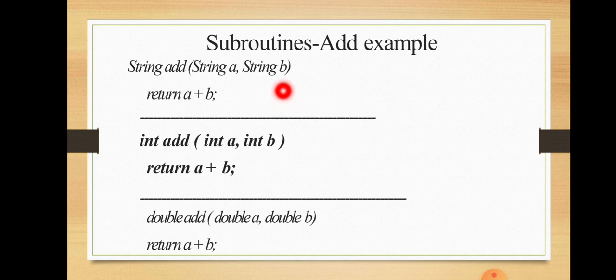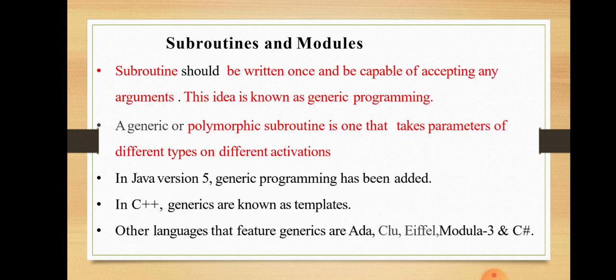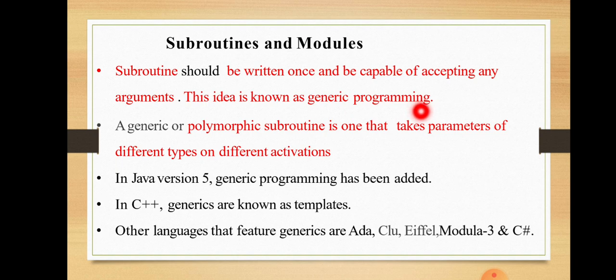So these are all examples of subroutines. The first one returns a string value, the second one returns an integer value, and the third one returns a double value. Subroutines should be written once and be capable of accepting any arguments. This idea is known as generic programming. We are going to learn what a generic subroutine is.